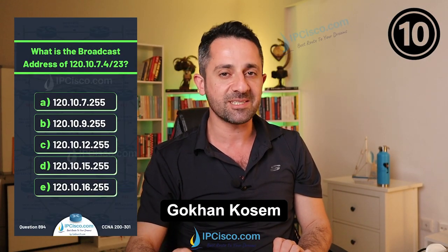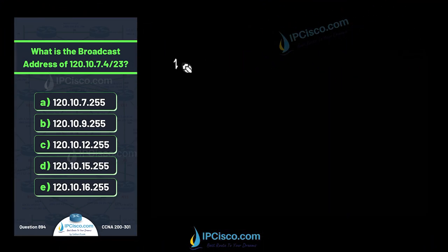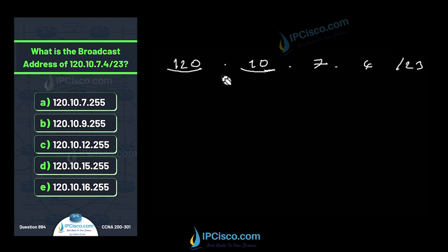What is the broadcast address of IP address 120.10.7.4/23? To find the broadcast address, we first find the network address using the AND operation between the binary IP address and the subnet mask. /23 means 23 network bits and the remaining bits are host bits. I'll write out the binary format — for the third octet, 7 in binary is 00000111, and 4 in binary is 00000100.